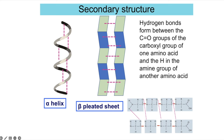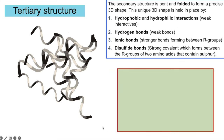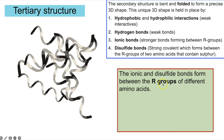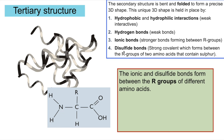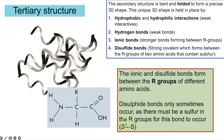The primary structure then folds or coils to form the secondary structure — either an alpha helix or a beta pleated sheet — held in place by hydrogen bonds between a hydrogen atom and an oxygen atom on different amino acids. A two-mark answer for secondary structure would state: alpha helices or beta pleated sheets, and that they're held by hydrogen bonds.